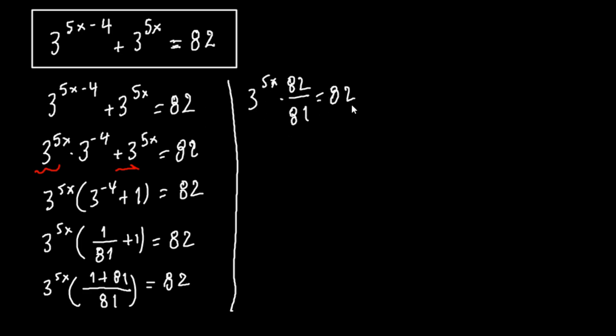So here we have 82 on this side and 82 on this side. We can simplify them. So we have 3 to the 5x times the fraction of 1 over 81 equals to 1.